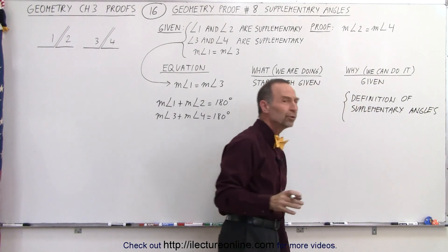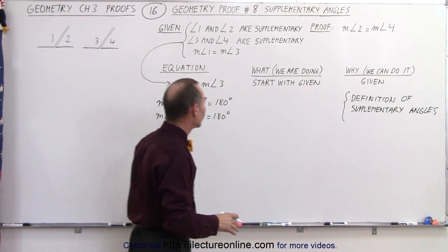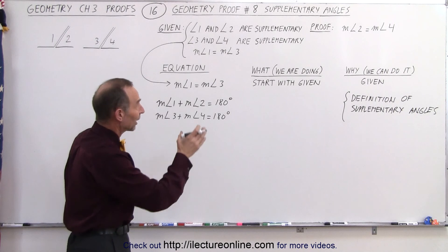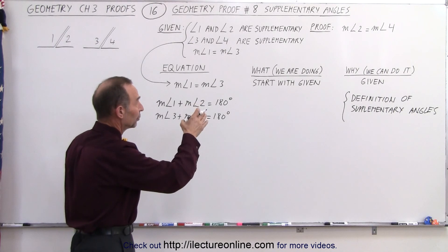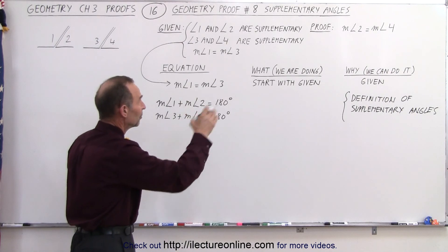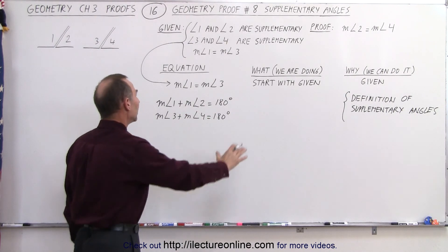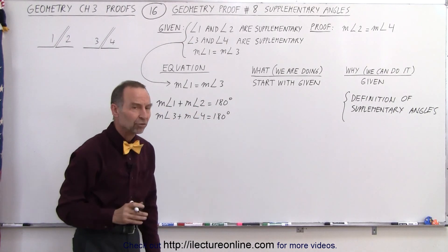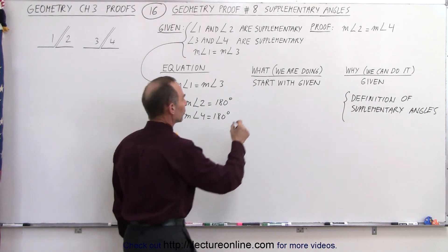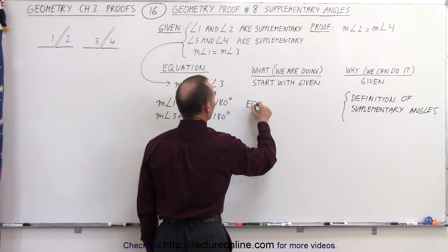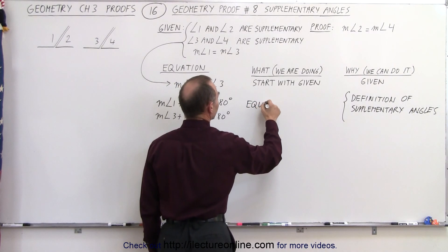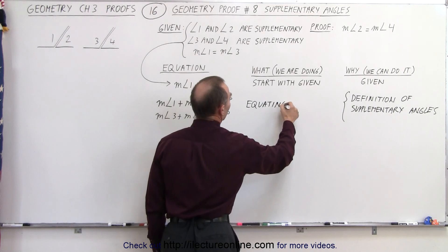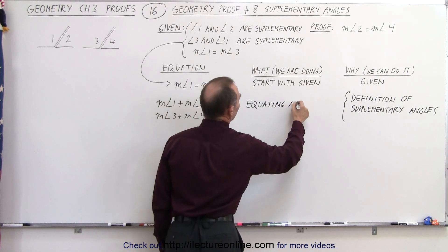So why do we do that? The only way we can prove that the measure of angle 2 equals the measure of angle 4 is to equate the measures of the angles. So that's what we're doing here — we're equating angle measures.